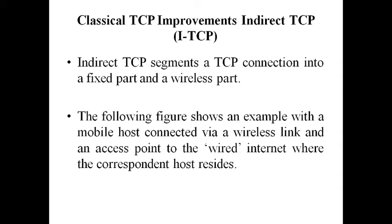The complete TCP cannot be changed because it is a huge network, and changing anything in TCP may introduce problems to the connected fixed networks. That is the reason we cannot change TCP completely. But we have to use the same TCP for mobile users as well, on wireless links. So together with the introduction of wireless LANs, several research projects were started with the goal to increase TCP performance so that it can help mobile users on wireless links.